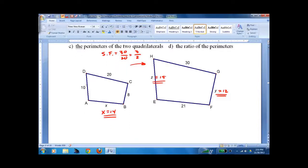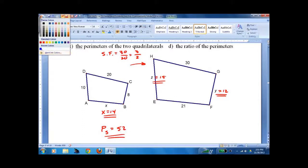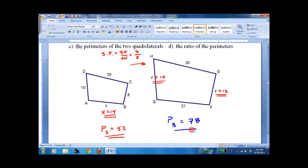Perimeter over here, add them up: 30, 44, 52. Perimeter of the smaller one looks like it's 52. Perimeter of the bigger one: 30, 42, 57, 78.